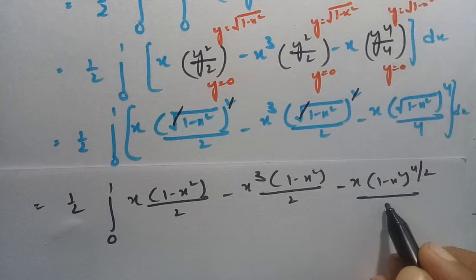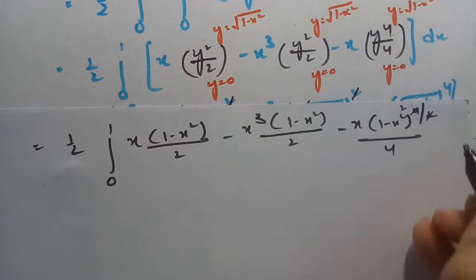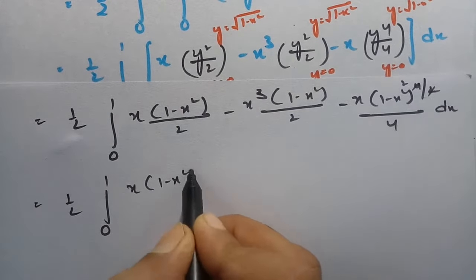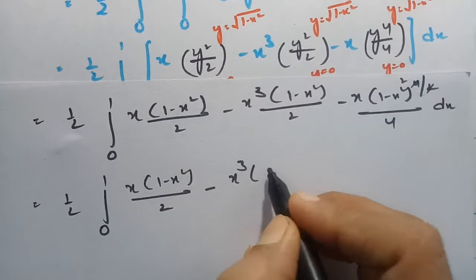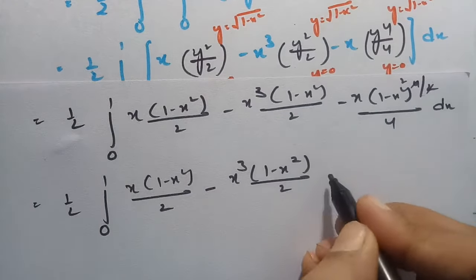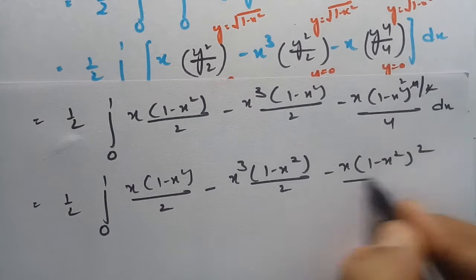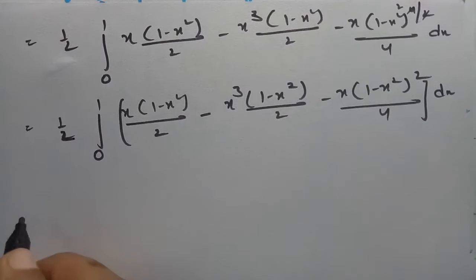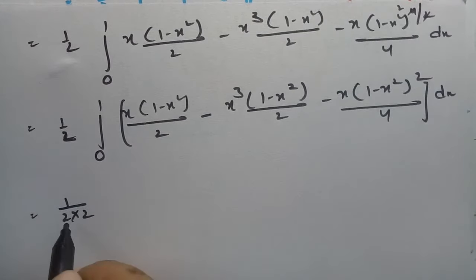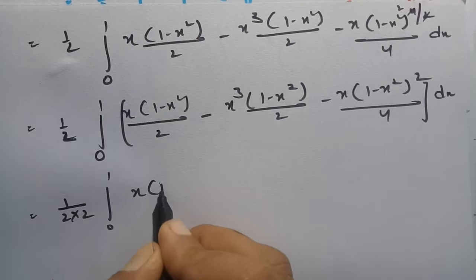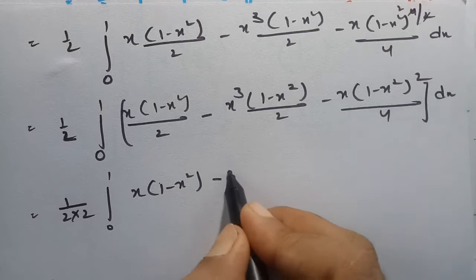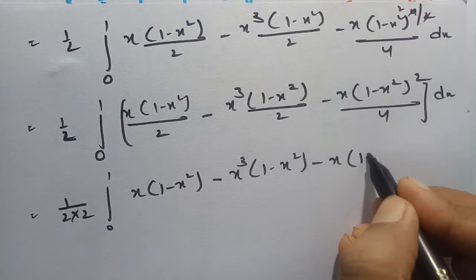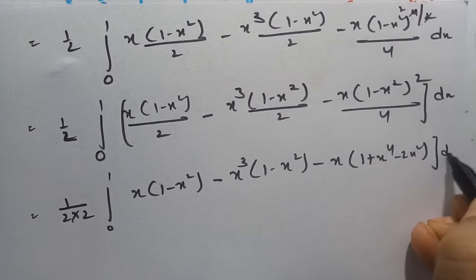Cancelling square and root again, and combining the (1/2) outside with the (1/2) factor, we get (1/4) times integral from 0 to 1 of x·(1−x²) − x³·(1−x²) − x·(1−x²)² dx. The term (1−x²)² is expanded as 1 + x⁴ − 2x².